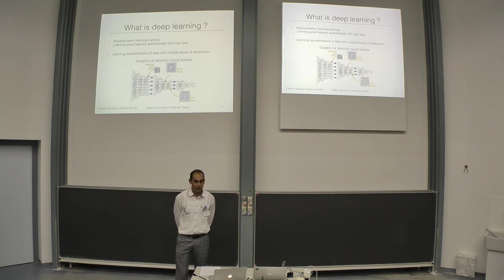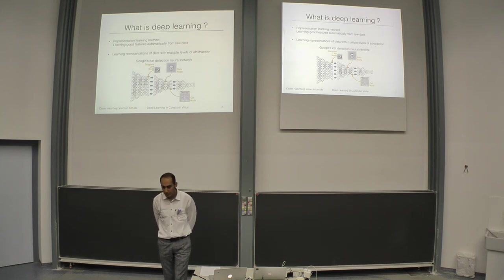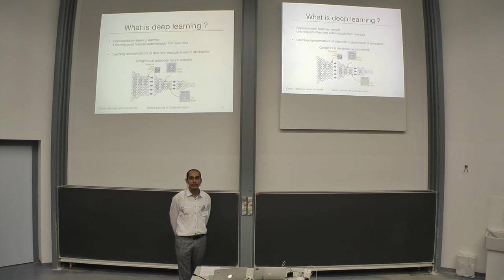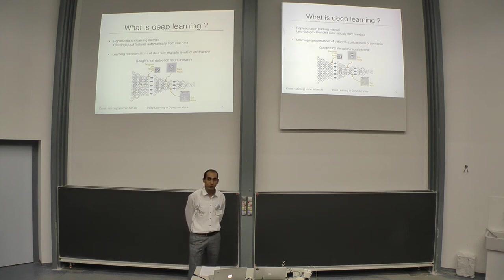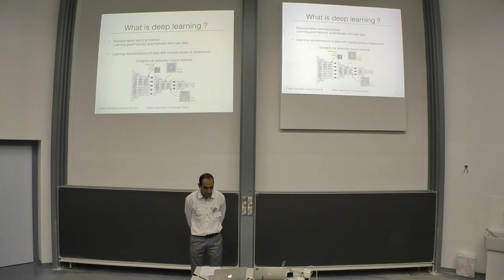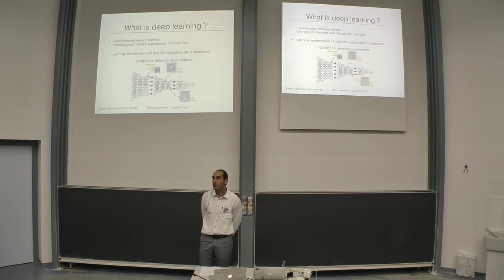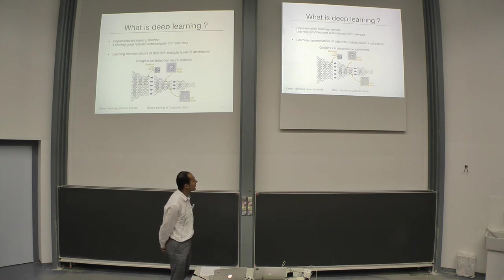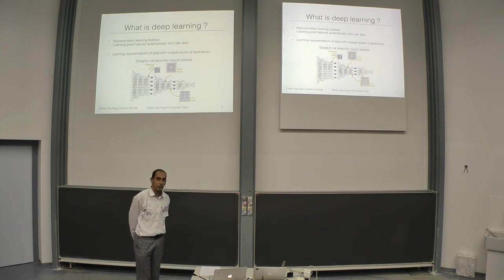This is where deep learning comes into action. Deep learning is a representation learning method. The idea is to learn good features and good representations of the data automatically from the raw data — which is basically the image, our observation. You learn representations using multiple levels of abstraction. Here is an example from Google's cat detection neural network.